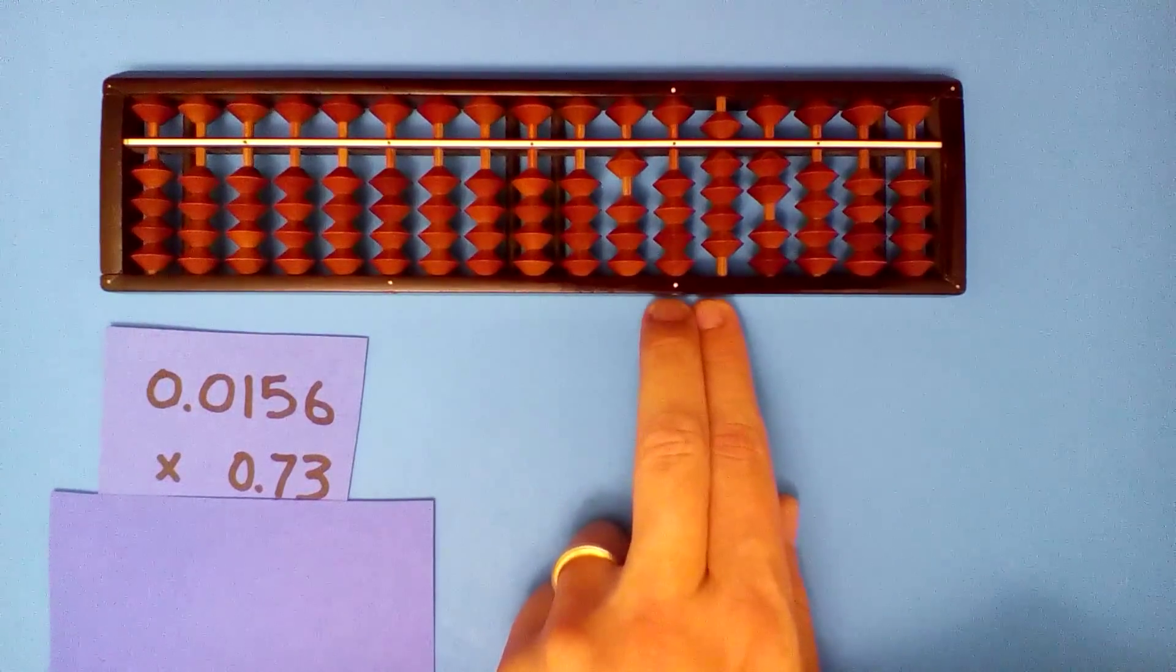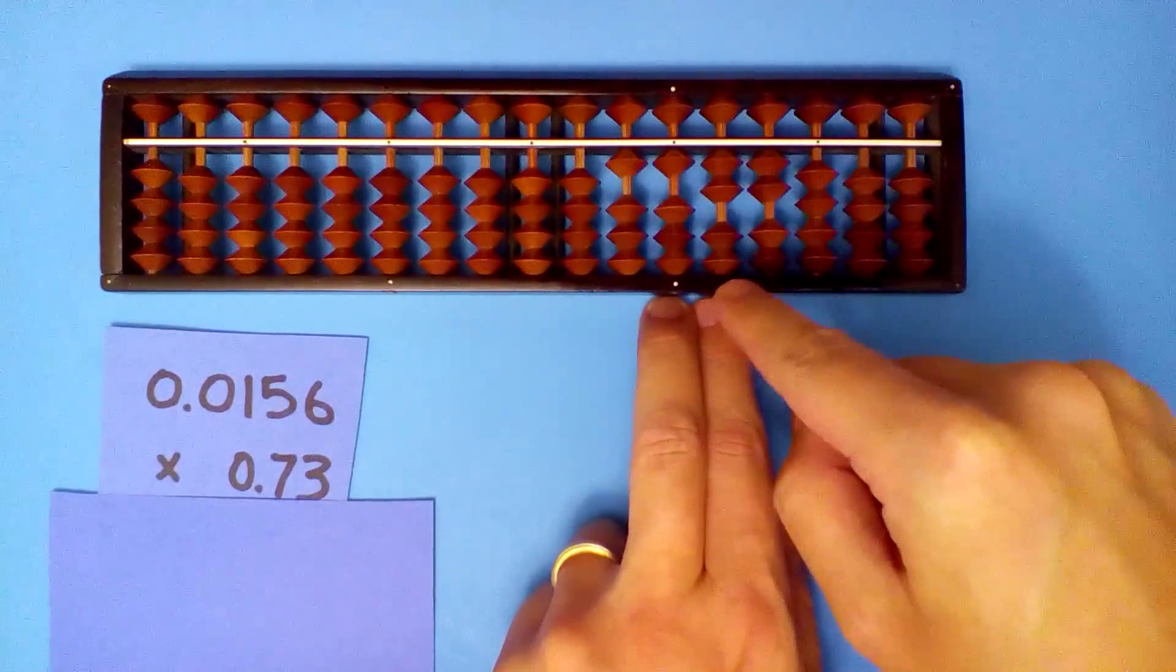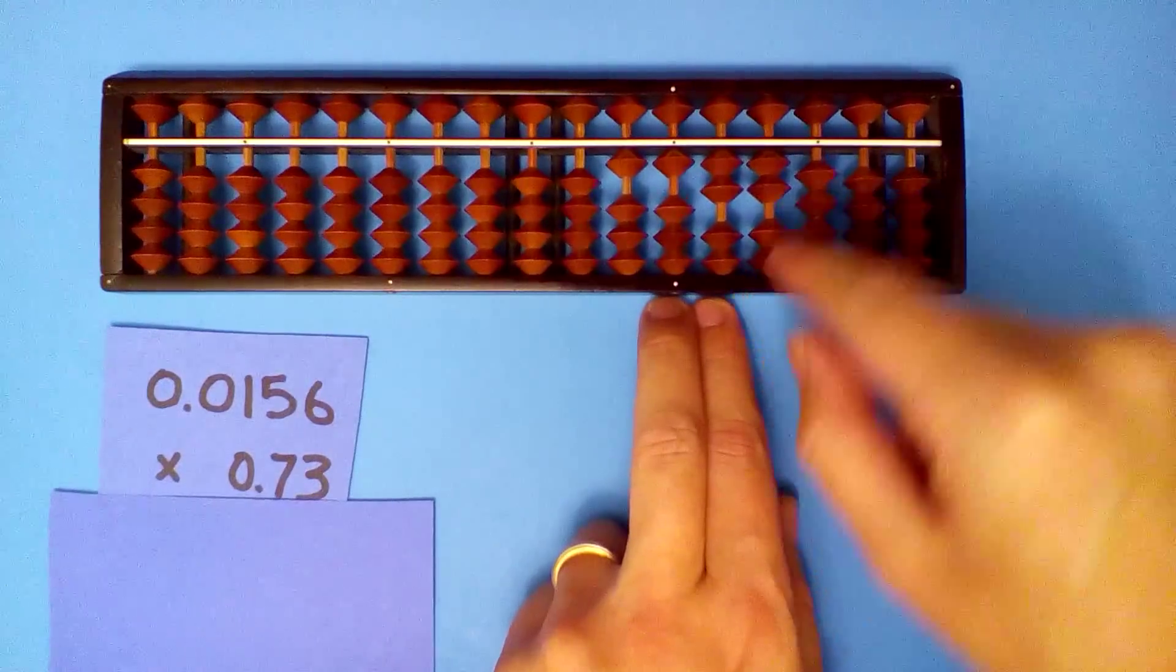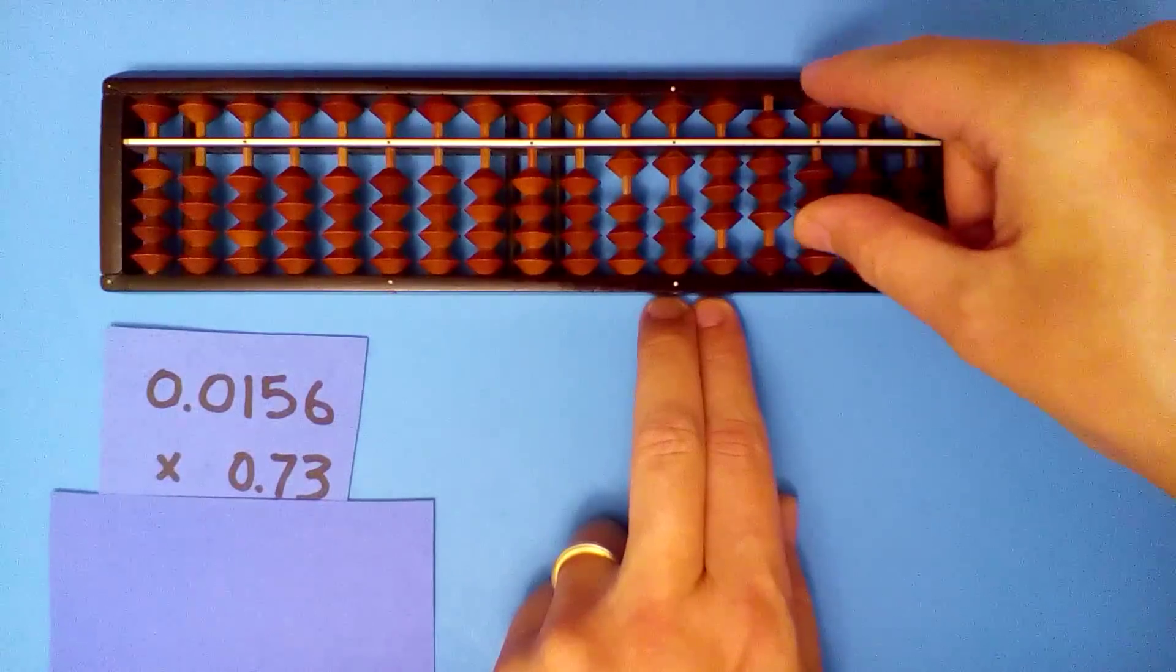One space to the right and use our three. Three times one, three. Three times five, fifteen. Three times six, eighteen.